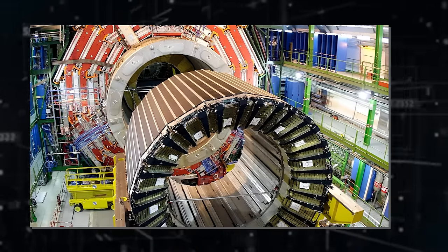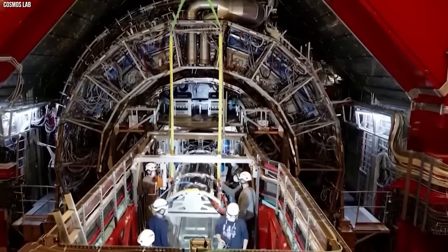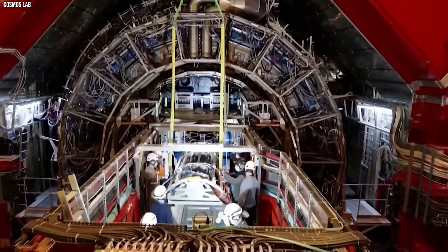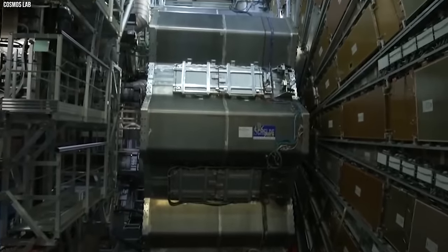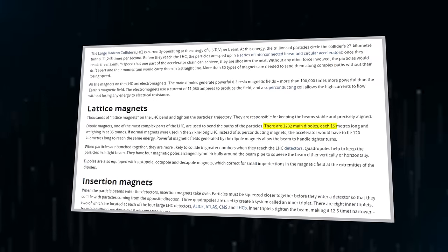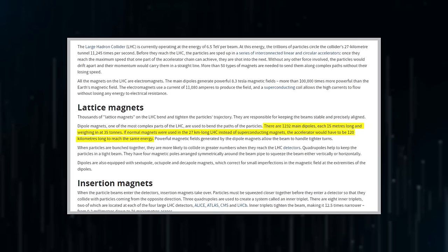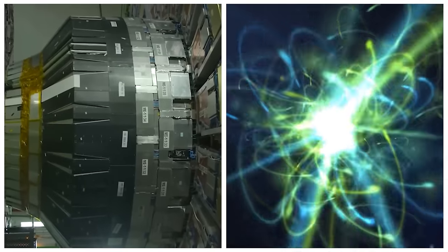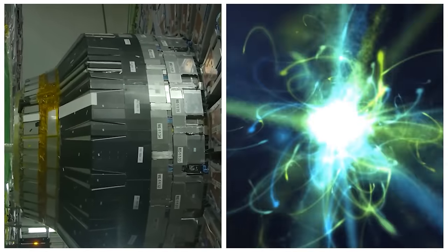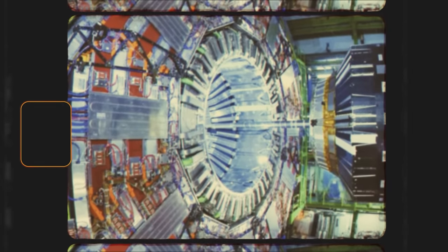Among the vast array of magnets, the lattice magnets play a crucial role in manipulating the trajectory of particles. These thousands of lattice magnets are vital for maintaining the stability and precise alignment of the particle beam. However, the most complicated components of the LHC are the dipole magnets. There are 1,032 main dipoles, each a whopping 15 meters long and weighing a hefty 35 tons. These colossal magnets are responsible for bending the paths of the particles. The strength of these dipole magnets enables the particles to navigate tighter turns, crucial for maintaining the desired trajectory within the collider.